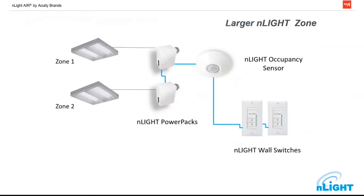Now we've added a second switch, a second zone or power pack, and an occupancy sensor. Again, we are Cat5-ing between our power packs, our occupancy sensor, and our switches, and we are running regular power out from our power pack to our light fixture. Essentially, what we've done is distributed our controls — we've taken what used to be a relay panel in a closet and moved it out into the space for easier wiring and easier configuration.